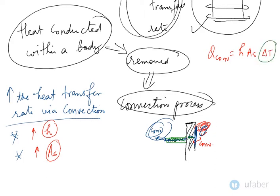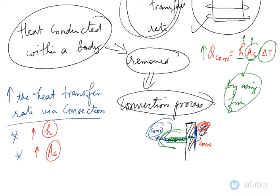To increase heat transfer, you either increase h or increase A_s. However, increasing h is not always a practical approach because h depends upon the surrounding fluid. If you have air, you have a pretty much constant value of h. So what we can do is increase the surface area — and we increase it by using fins. By using fins we are increasing the surface area, not the value of the convective heat transfer coefficient.